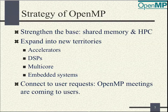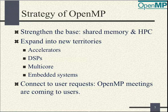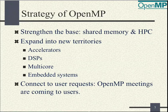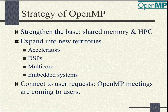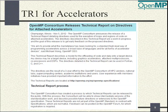Along with the continuing evolving OpenMP, the OpenMP ARB organization was continuously growing, leading to a total number of members of 24 at the moment, and still new members are being added. Both vendors and users of OpenMP products are members of the ARB. The strategy of OpenMP is firstly to strengthen the base — traditionally OpenMP has been strong in shared memory and HPC — but in addition, OpenMP has the objective to expand into new territories: accelerators, DSPs, multicore, and embedded systems.